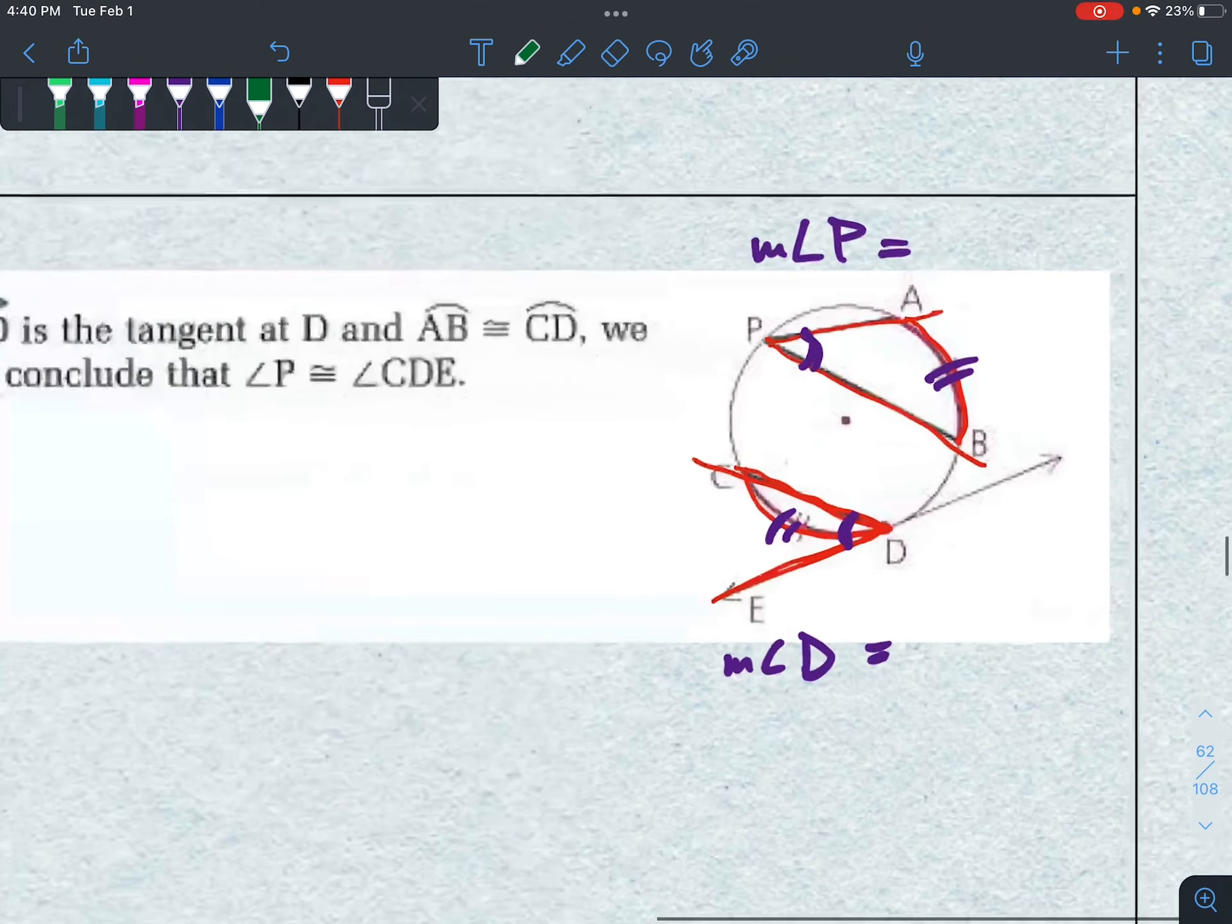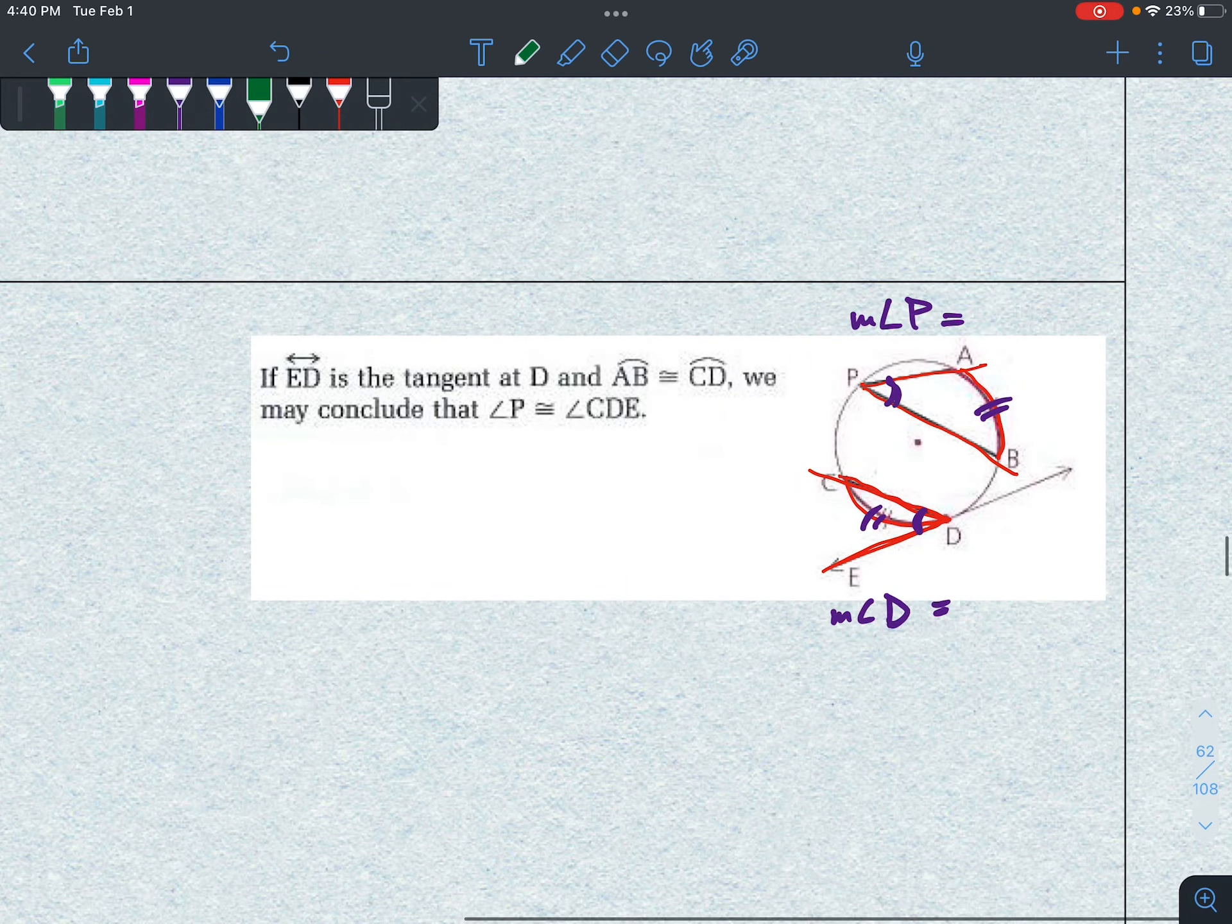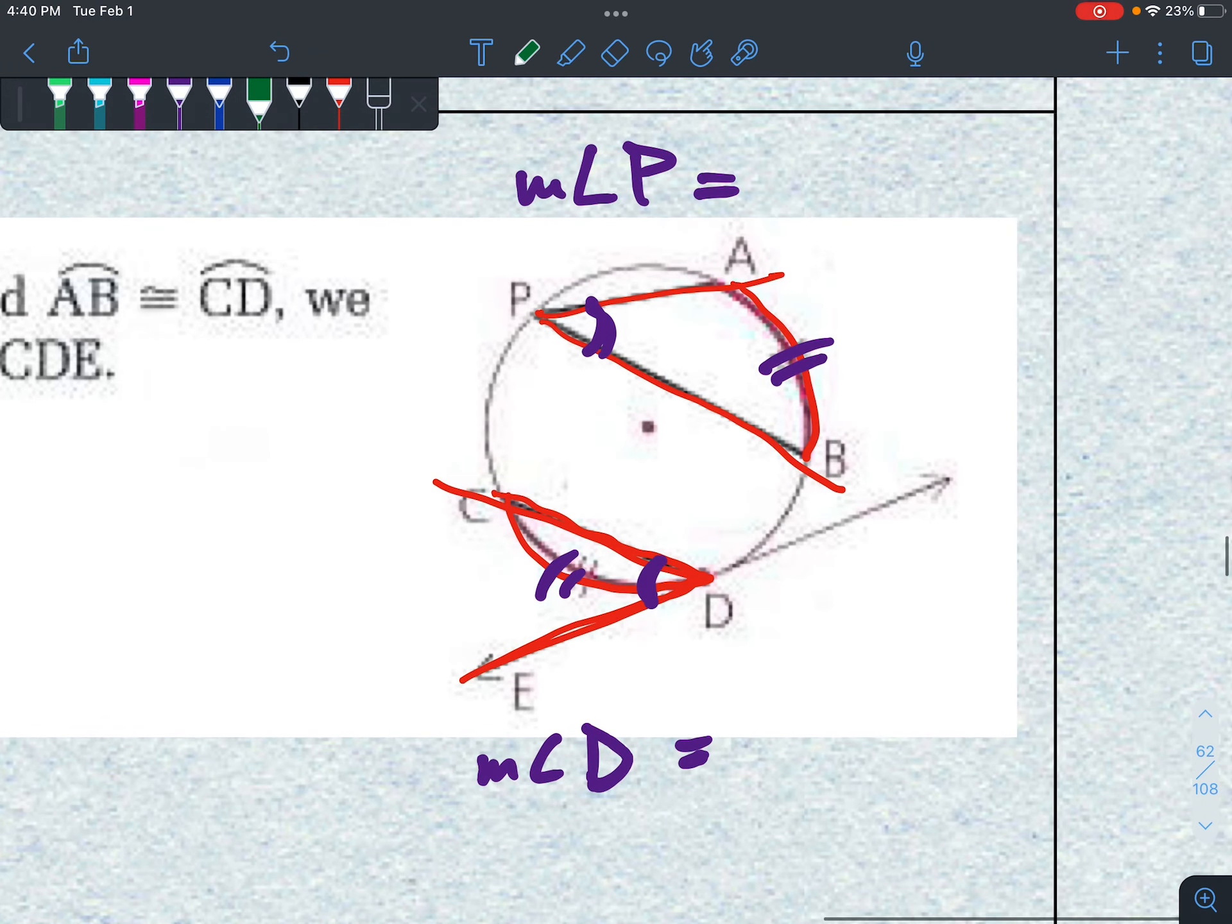This one is very similar. I'll say it's the same thing because if I have two arcs, and I know that these two arcs are congruent, so this arc and this arc.